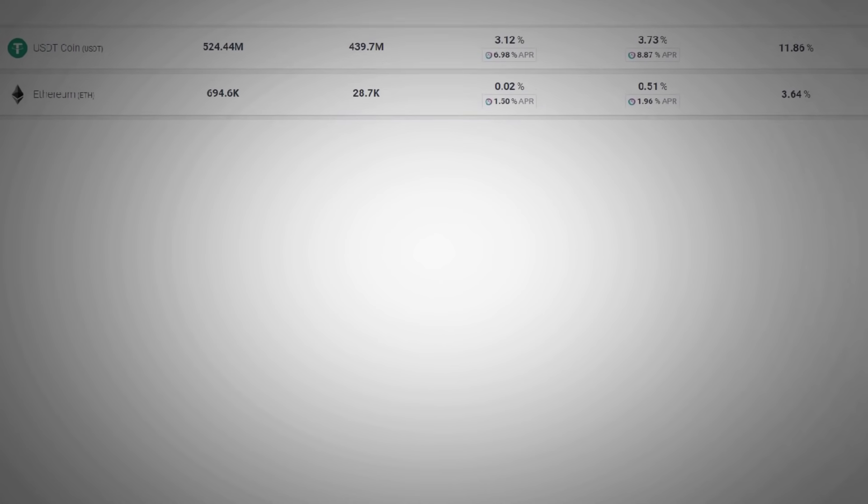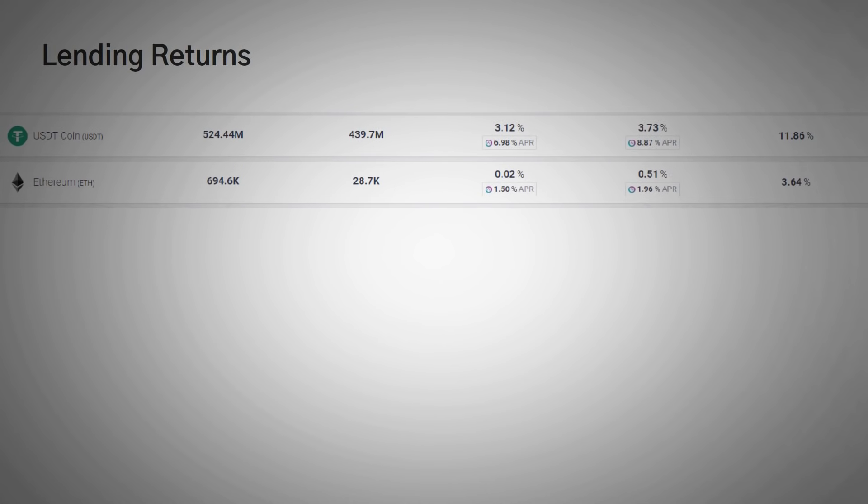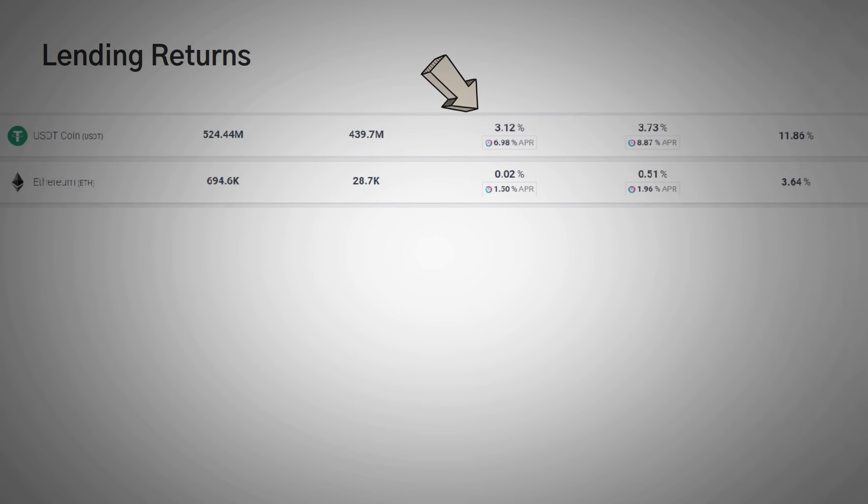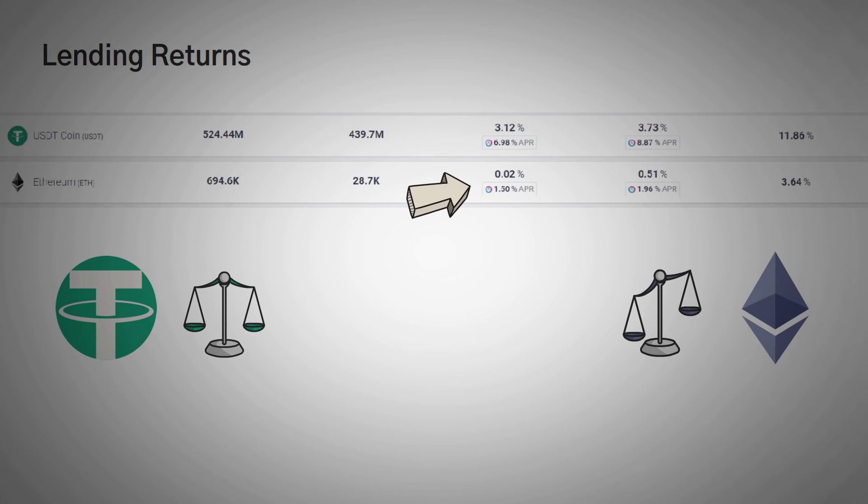If you go to app.aave.com slash markets, you can see the current rates for borrowing and lending. For example, if you look here, you can see USDT, which is Tether, is offering a pretty decent deal. And then you can also see that Ethereum is offering quite a low rate. This is because Tether is a stablecoin and it won't move much in price, but Ethereum is very volatile at the moment.